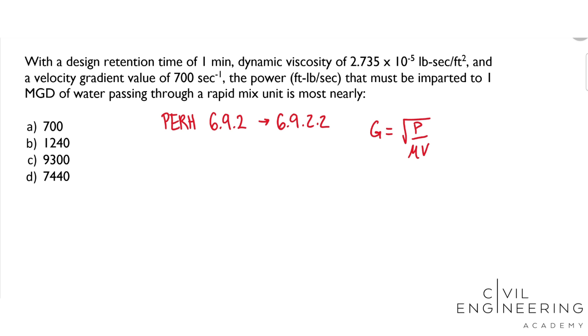Let's see what the problem statement gives us. We have retention time of 1 minute, so T equals 1 min. Dynamic viscosity, that's mu, equals 2.735 times 10 to the negative 5 pound sec per feet squared. Velocity gradient of 700 seconds to the negative 1, so that's our G.